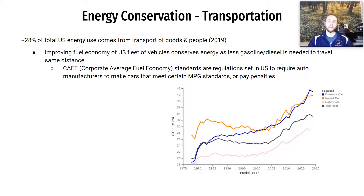CAFE stands for Corporate Average Fuel Economy. It is a measure of the average MPG, or miles per gallon, that the fleet — meaning all small vehicles in America, not including heavy trucks — must achieve. Automakers are required by the government to make vehicles that, on average across all their models, achieve certain standards. By raising those standards over time, we can travel the same distance while using less gasoline or fuel. This is a great example of large-scale energy conservation.